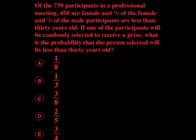of the 750 participants in a professional meeting, 450 are female, and one-half of the female and one-quarter of the male participants are less than 30 years old. If one of the participants will be randomly selected to receive a prize, what is the probability that the person selected will be less than 30 years old?